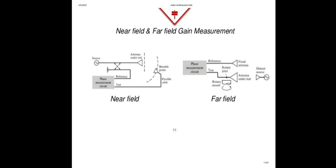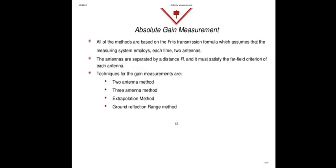Now we will consider the fields. Generally, the near field and far field are used — these are called the Fresnel and Fraunhofer regions. The Fresnel region, which is the near field, is very near to the antenna and is called the induction field, used for phase measurement and gain measurement. In the far field radiation, generally only far field radiation is used. The setup consists of the reference antenna fixed at one end, a distant source, and the antenna under test. This is the setup of the gain measurement of antenna systems.